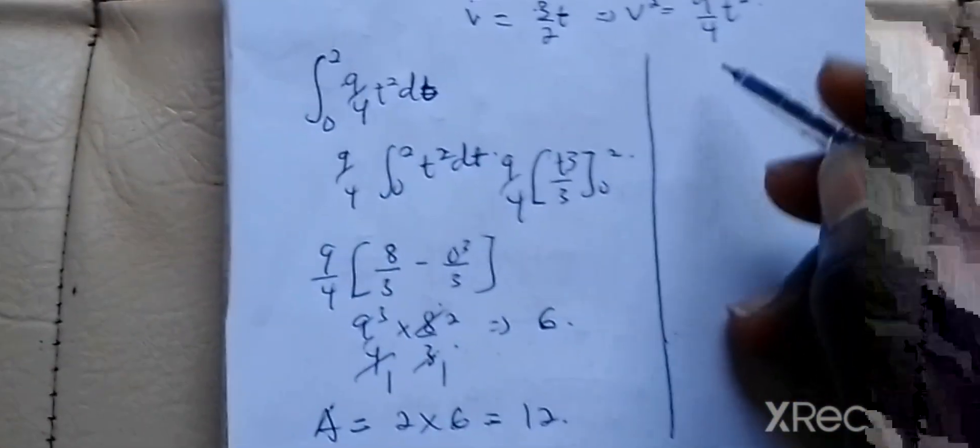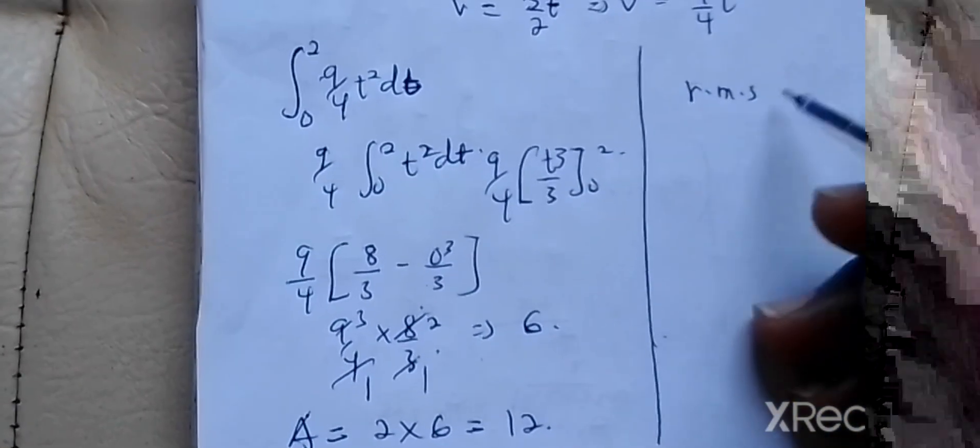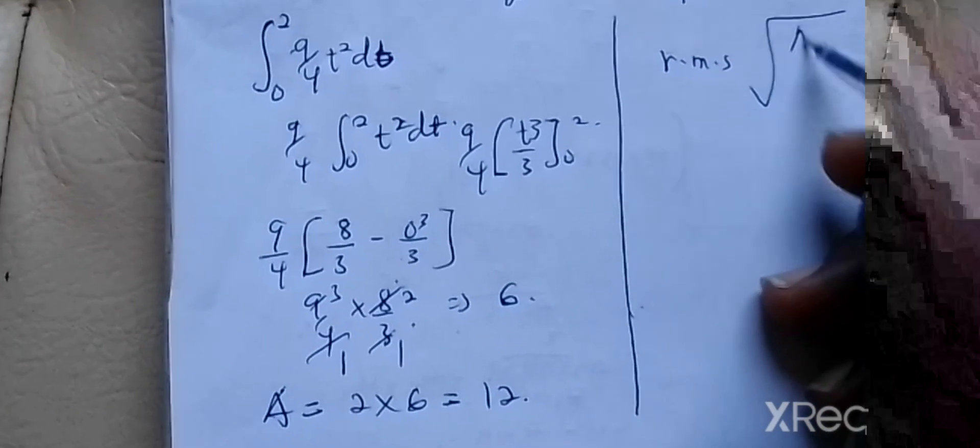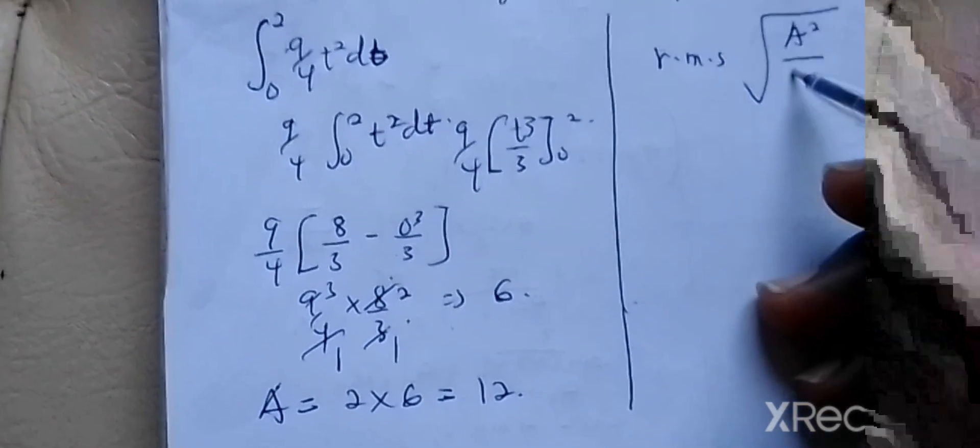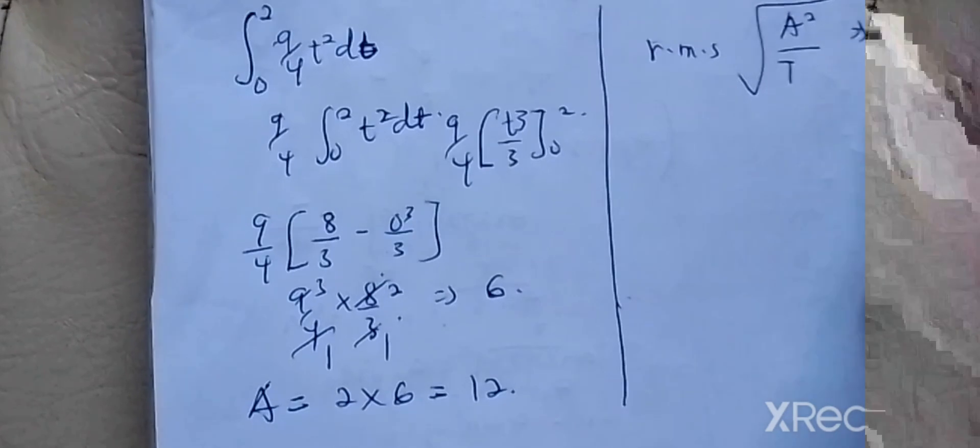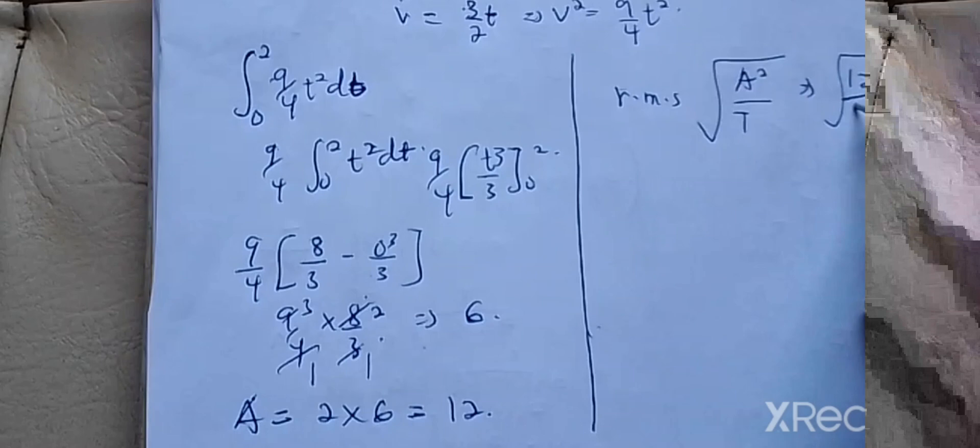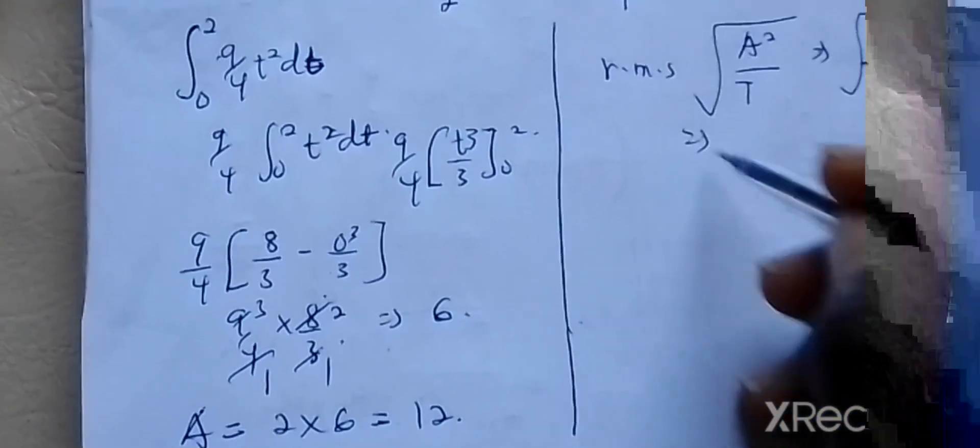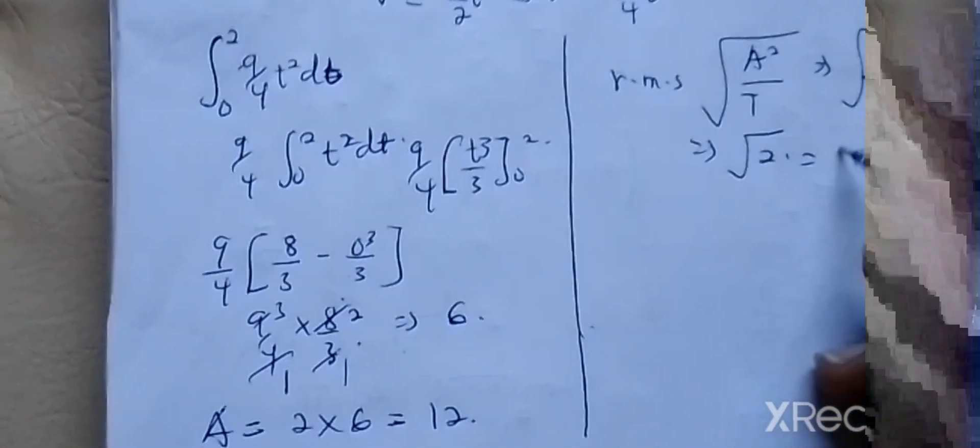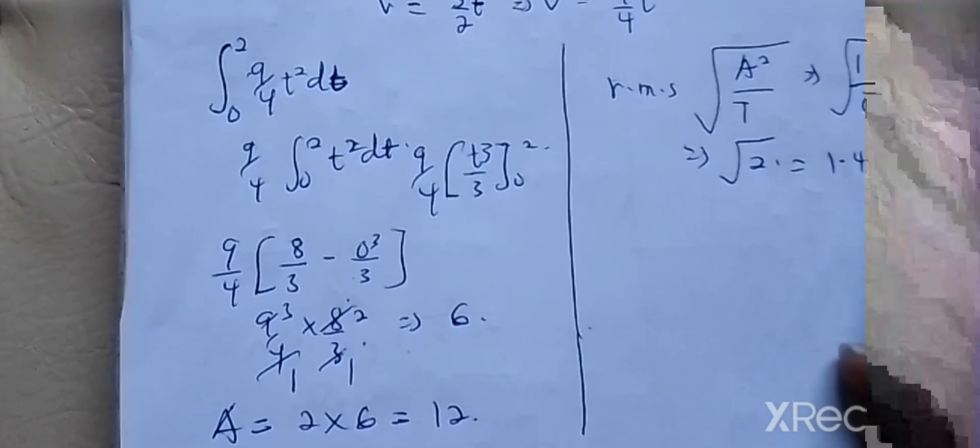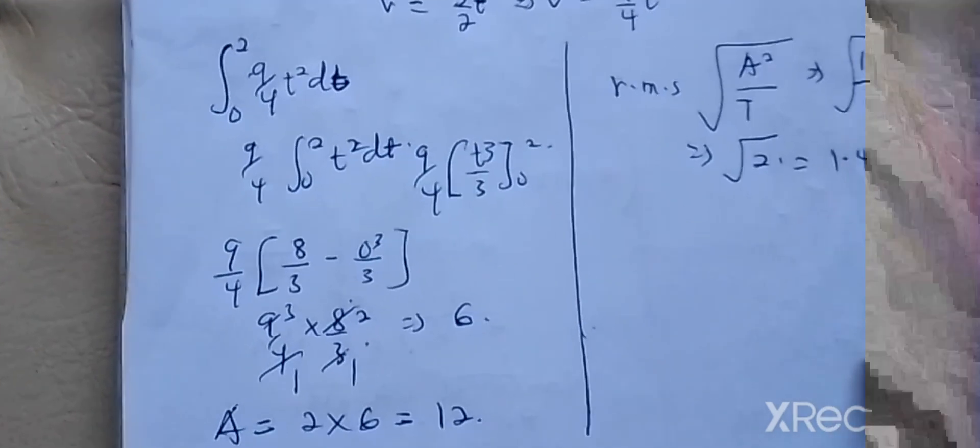Once you get 12, the next thing is to divide it by the period. Our RMS equals the square root of the squared area over the period. So square root of 12 over 6, that's square root of 2, which gives us 1.414 or 1.41 volts.